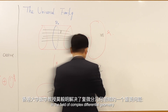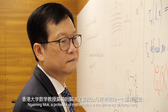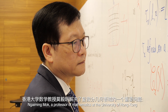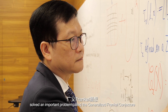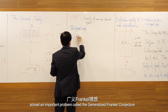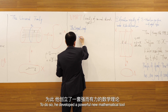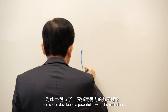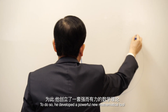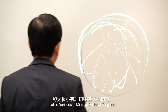In the field of complex differential geometry, Ngaiming Mok, a professor of mathematics at the University of Hong Kong, solved an important problem called the generalized Frankel conjecture. To do so, he developed a powerful new mathematical tool called varieties of minimal rational tangents.